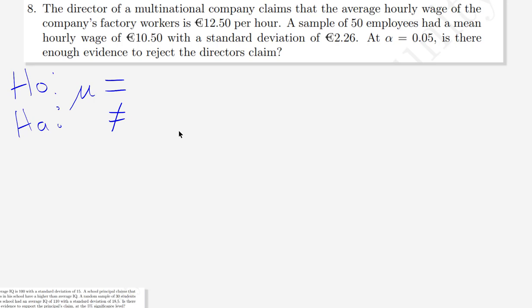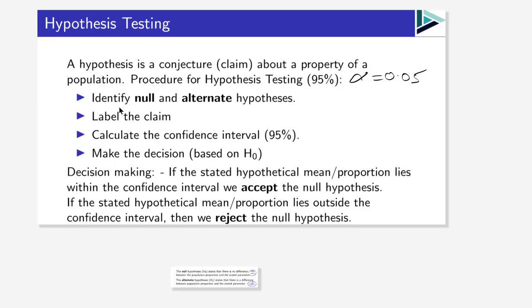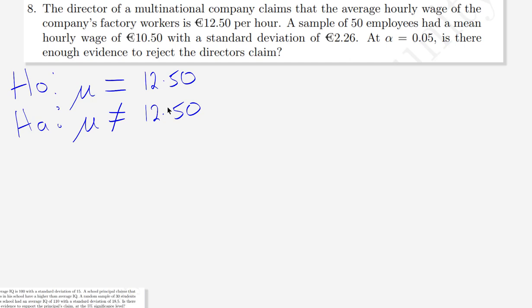The population in this case is all the factory workers. The claim is that the population mean is €12.50, therefore the null hypothesis is mu equals €12.50, and the alternate hypothesis is mu not equals €12.50. That is also the claim. I've identified the null and alternate hypothesis and now I label the claim.